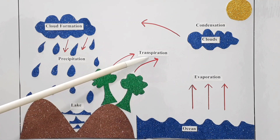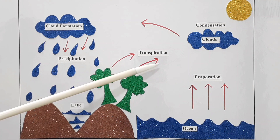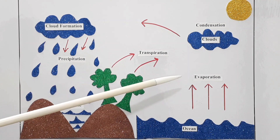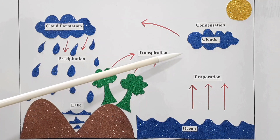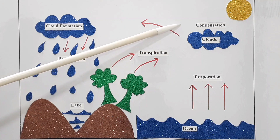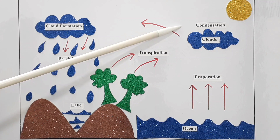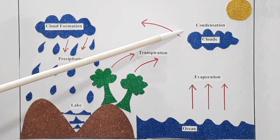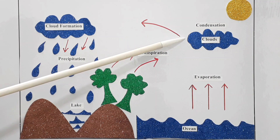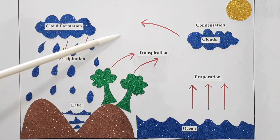Plants also add water to the atmosphere by the process of transpiration. When the air becomes cold, the water vapor changes into drops of water. This process is called condensation. These drops of water stick together and form clouds.